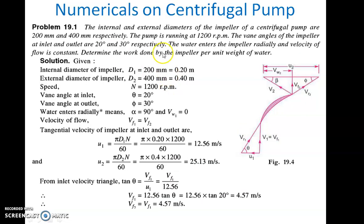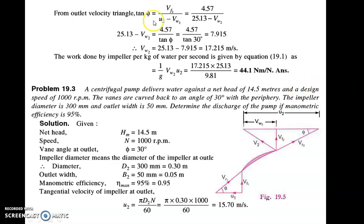From the outlet velocity triangle, we need to find Vw2. Tan(phi) = Vf2 upon (U2 minus Vw2). So tan(30°) = 4.57 divided by (25.13 minus Vw2). This gives 25.13 minus Vw2 = 4.57 upon tan(30°), which gives Vw2 = 17.215 m/s. Hence the work done by the impeller per kg of water per second is Vw2 U2 upon G — the Euler's head. So it is 17.215 × 25.13 / 9.81 = 44.1 Newton meter per Newton.